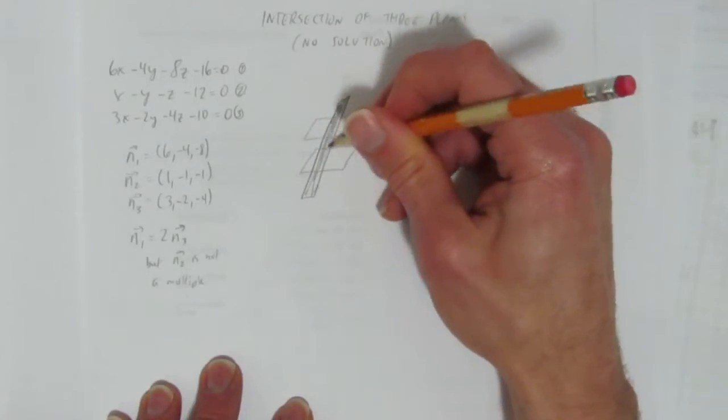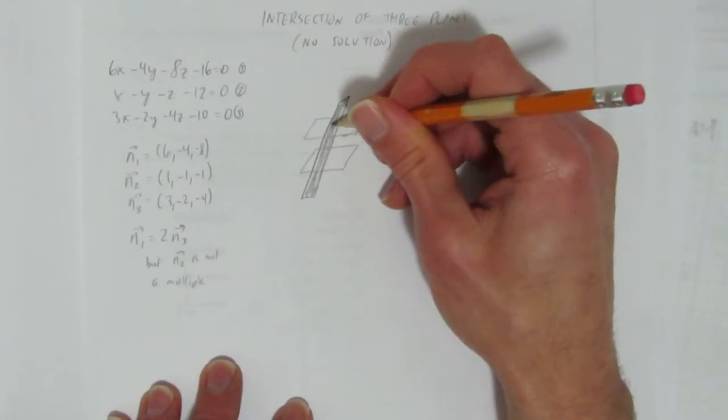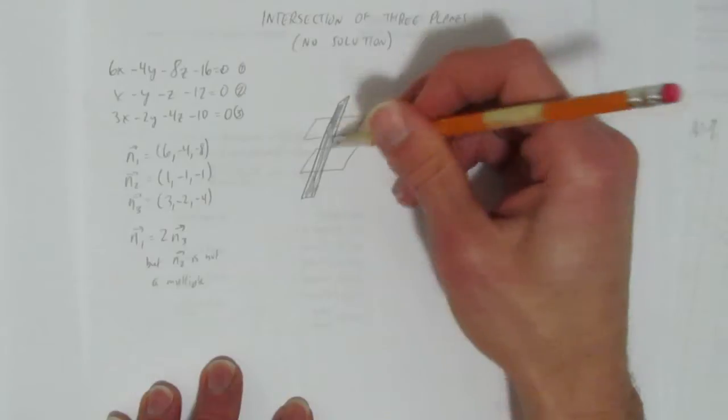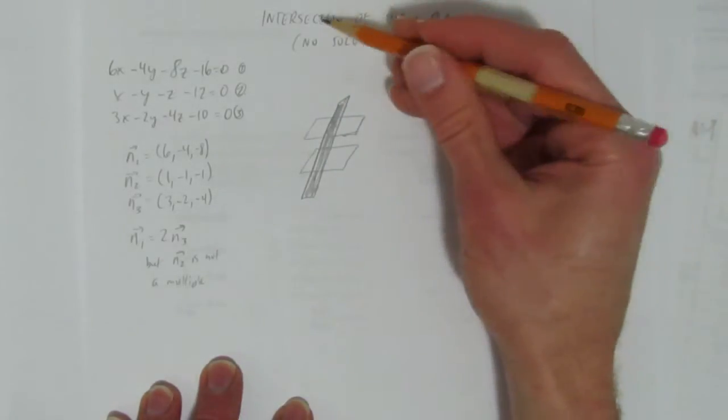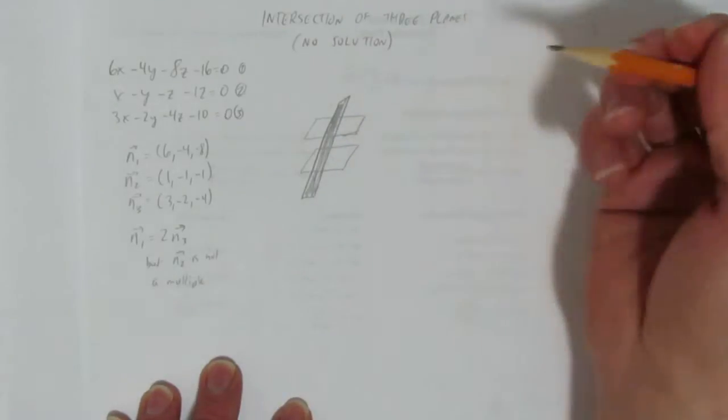So where are they intersecting? Well, two of them intersect here, and then they also intersect, two intersect here, but at no point do all three planes intersect. They've got a pair here and a pair here, but no triple intersection, and that's what we mean by intersection. All three have to intersect in the same place. Since they don't, it's already over.